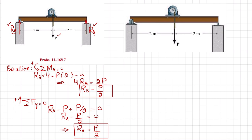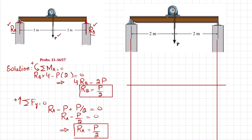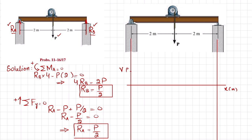With RA and RB known, we draw the shear force diagram. At point A the shear force is RA = P/2, and it remains constant until the midpoint where load P is applied. There, P/2 − P = −P/2, so the shear drops to −P/2 and remains horizontal to the end. This is the shear force diagram.